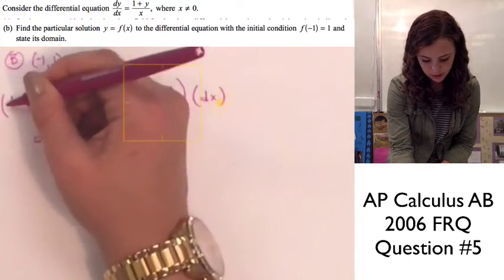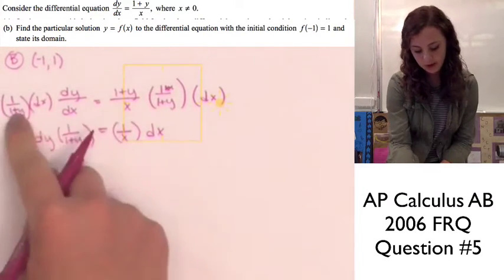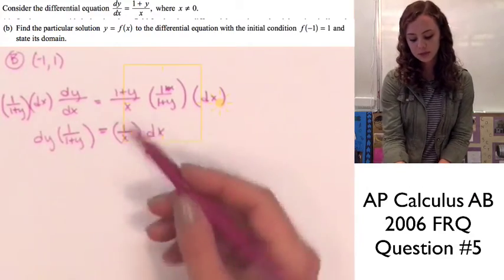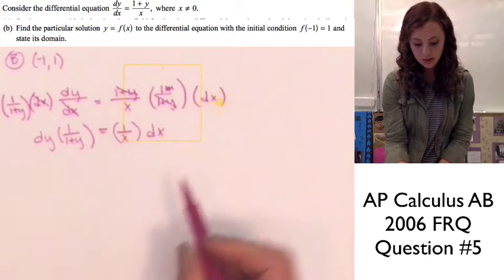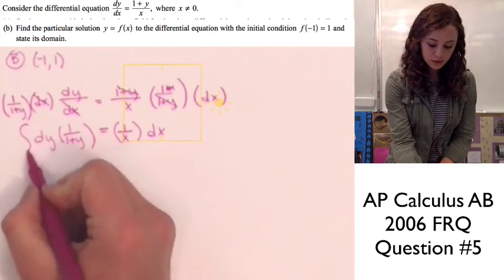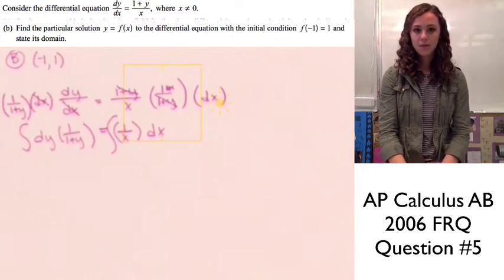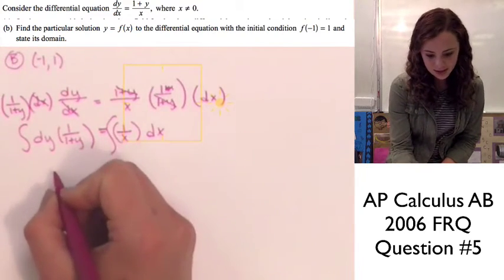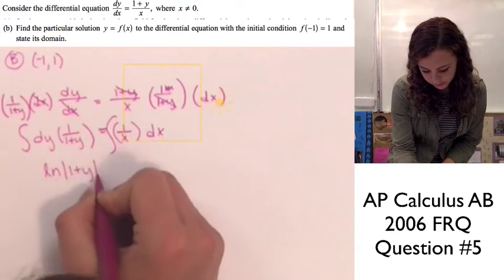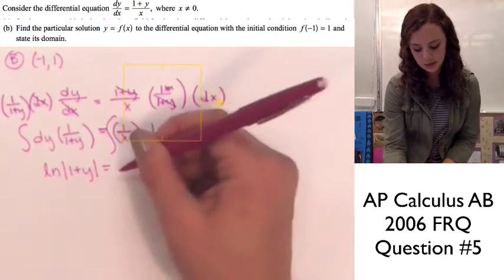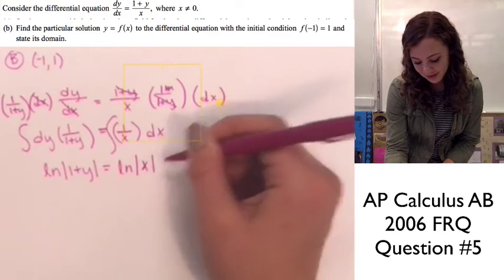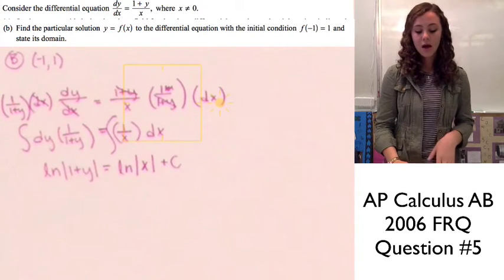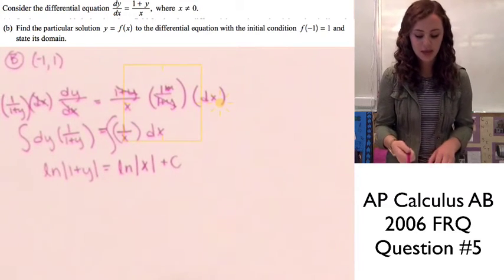We're dividing by (1 + y), which is the same as multiplying by 1/(1 + y), and multiplying by dx on both sides. Now we integrate. For 1/(1 + y), the antiderivative is the natural log, so we get ln|1 + y| = ln|x| + C. We add the constant C on the dx side, as we always do when taking the antiderivative.